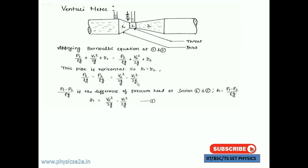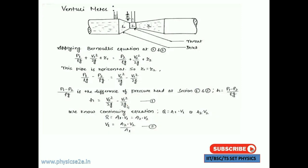The term p1 minus p2 divided by ρg is the differential pressure head at sections 1 and 2, meaning the pressure indicates the height. So p1 minus p2 divided by ρg equals h. Substituting h into the equation: h equals v2²/2g minus v1²/2g. We also know the continuity equation: q equals a1 times v1 equals a2 times v2.